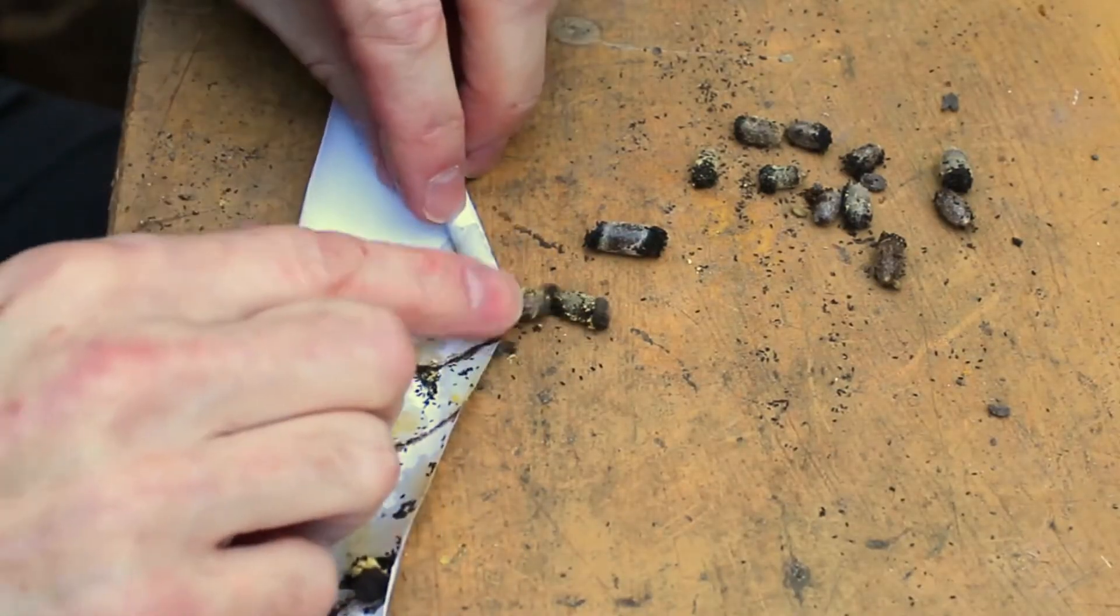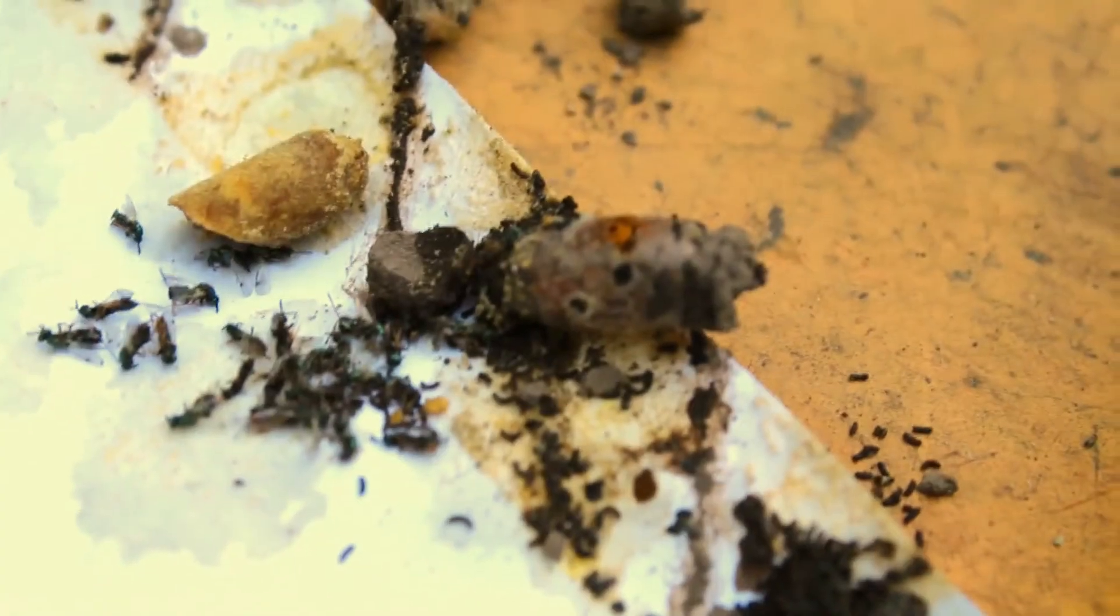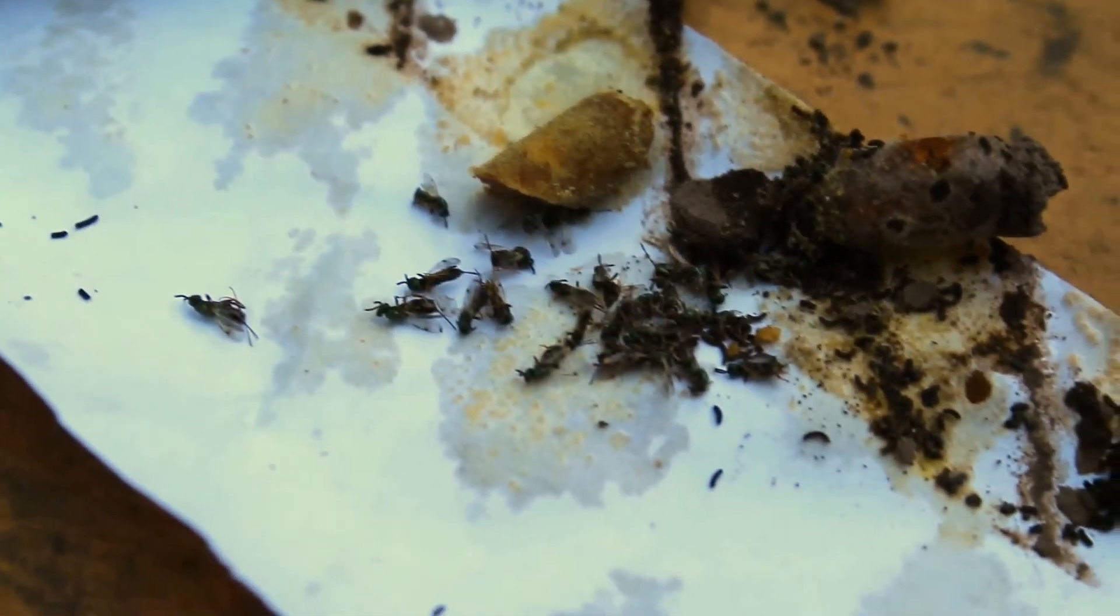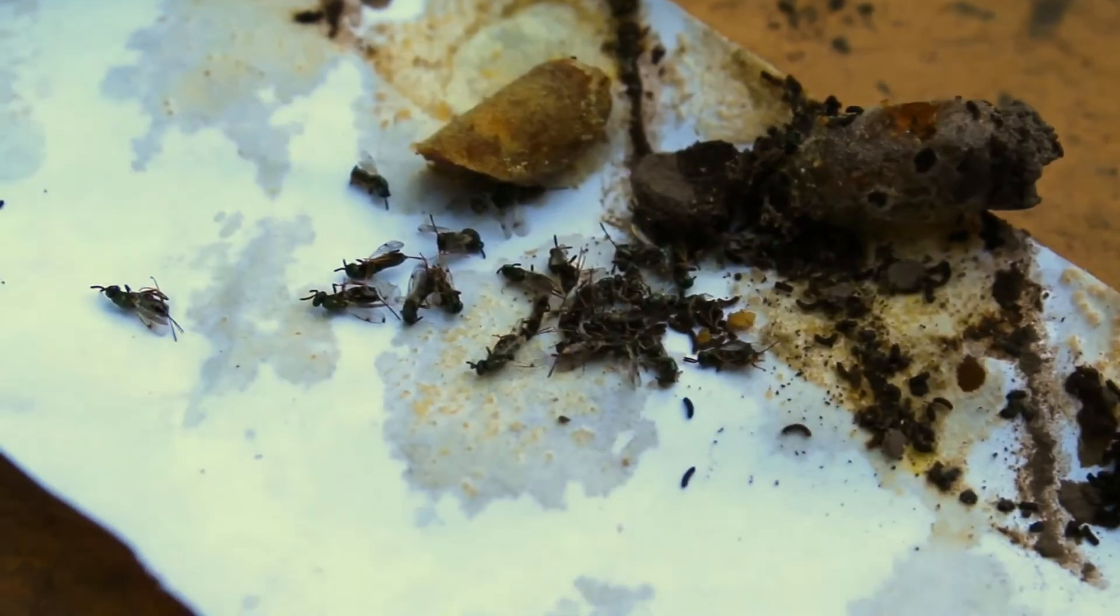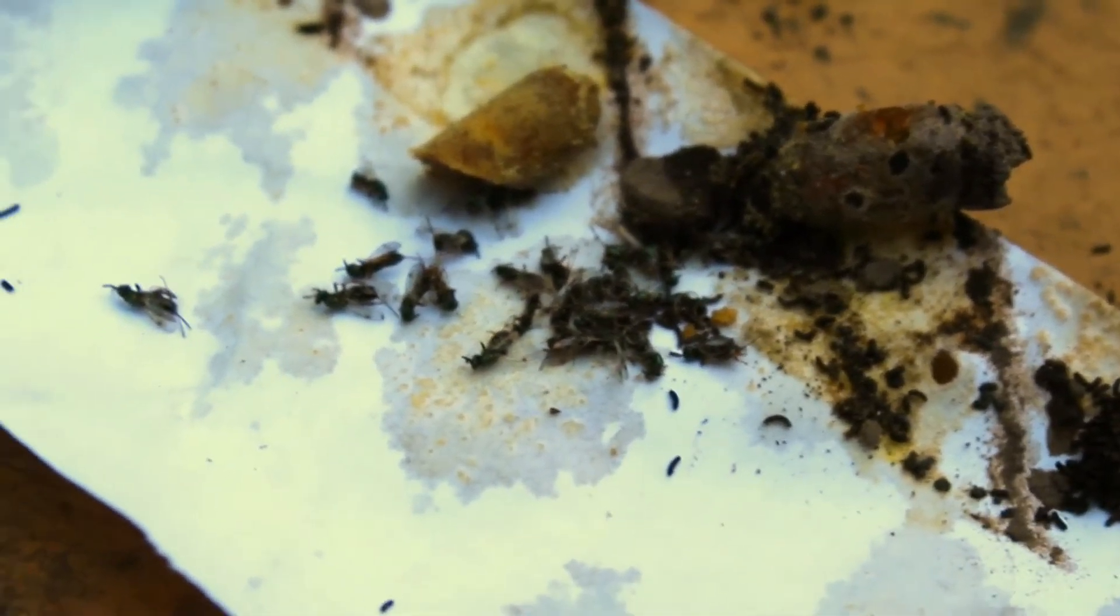Here is an example of a common predator, the parasitic calcid wasp. It sneaks into mason bee nesting tubes, paralyzes the mason bee larvae, and then lays its eggs inside the cocoon. The wasp larvae will then eat the mason bee larvae as they develop into adult wasps.